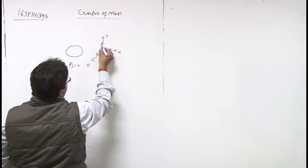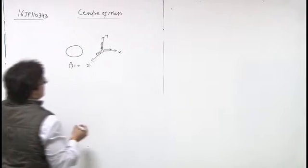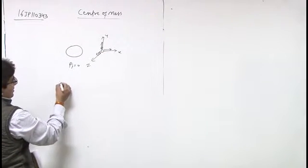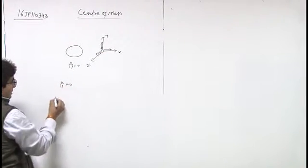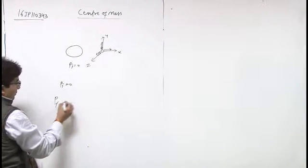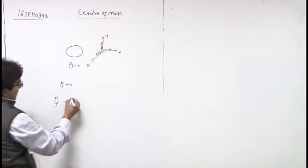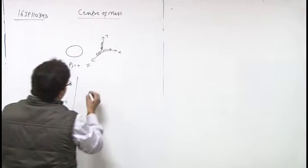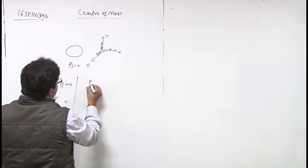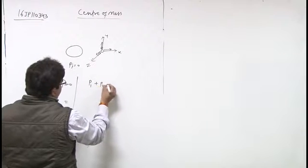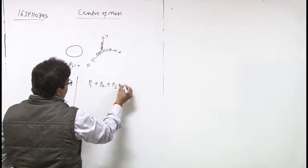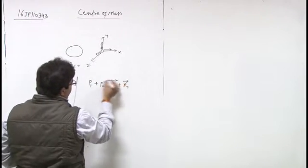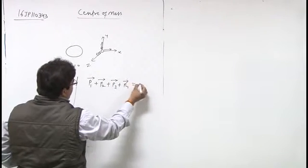Momentum of the system must remain constant, so final momentum of fourth particle must balance the remaining momentum. So we can say P1 plus P2 plus P3 plus P4 must equals to 0, equals to initial momentum.